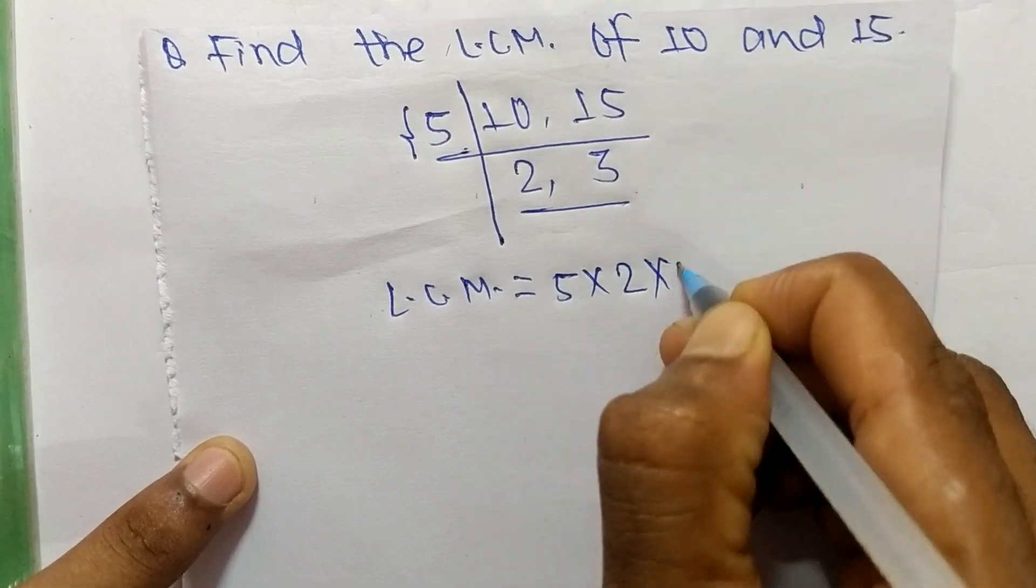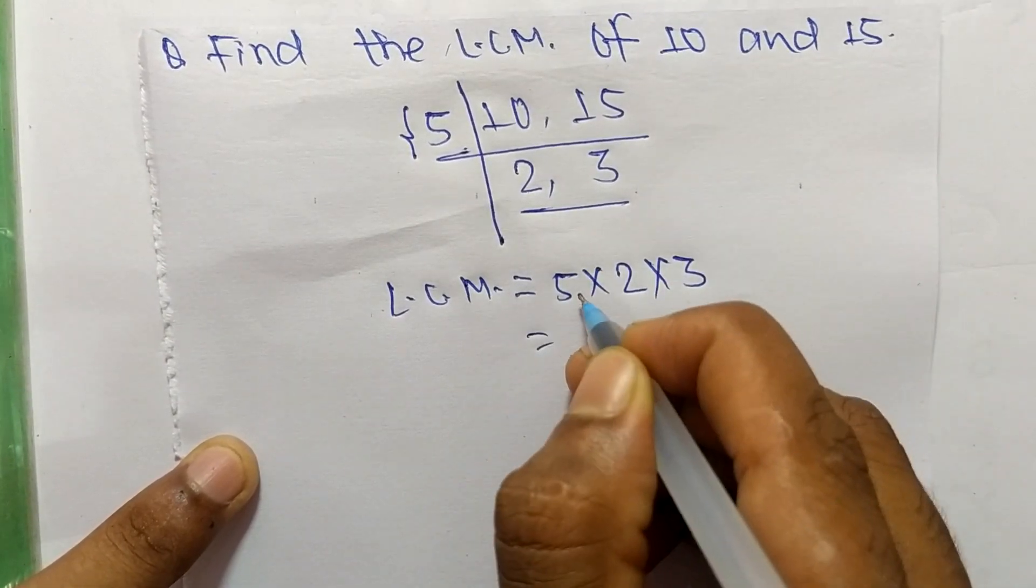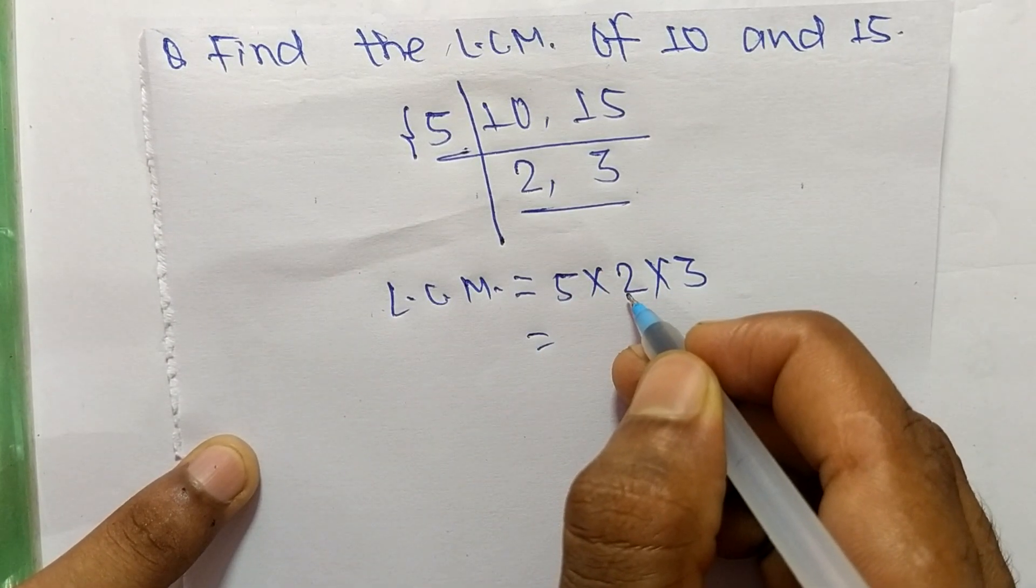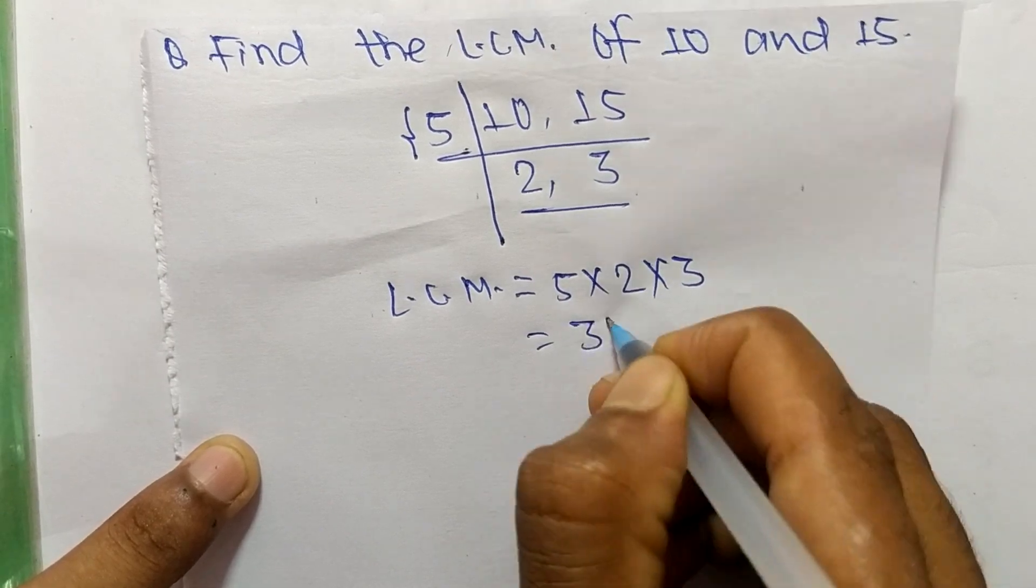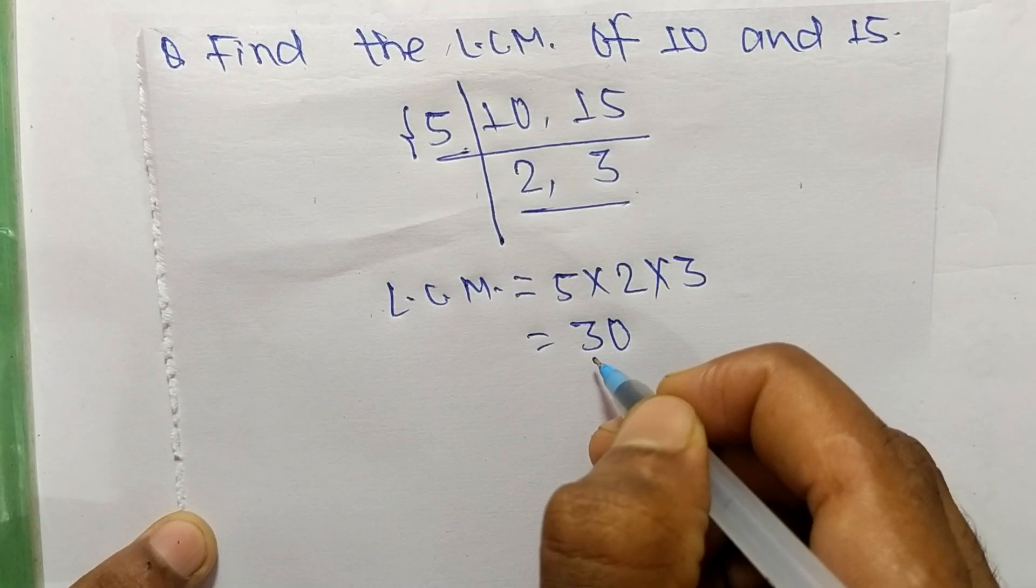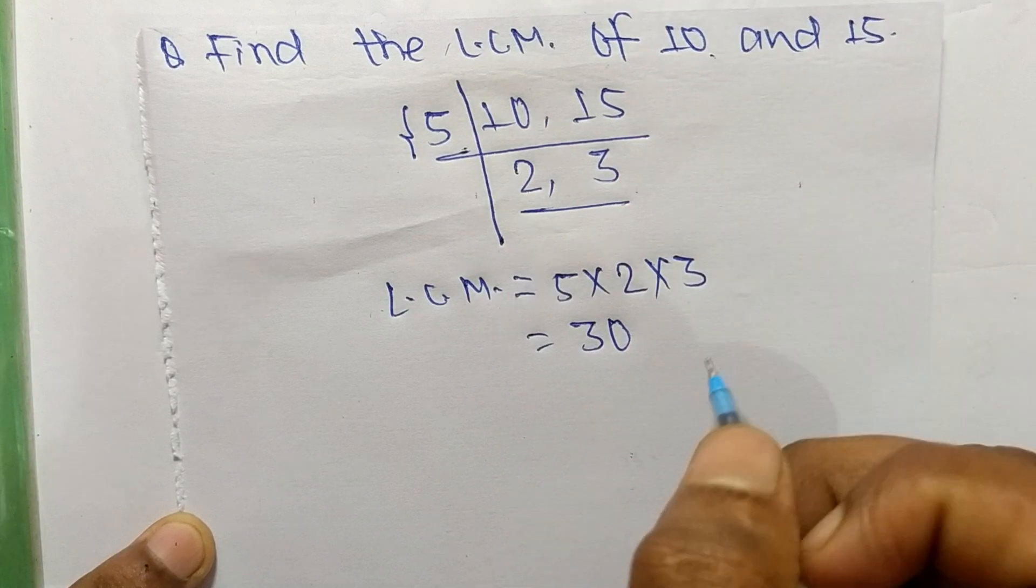From this part it is 2 times 3. So 5 times 2 means 10, and 10 times 3 means it is 30. So 30 is the LCM of 10 and 15.